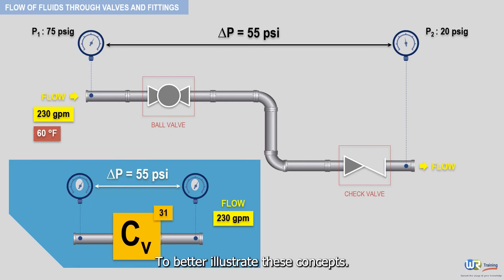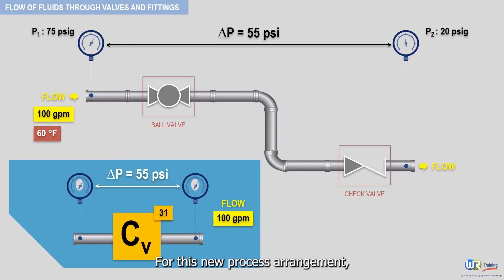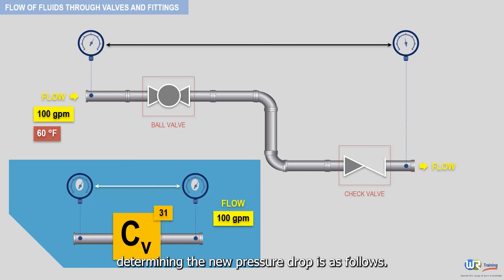To better illustrate these concepts, let's suppose now that the water flow rate is 100 GPM instead of 230. For this new process arrangement, determining the new pressure drop is as follows.